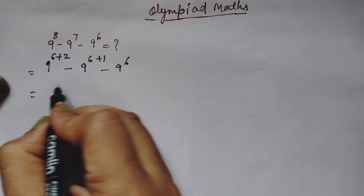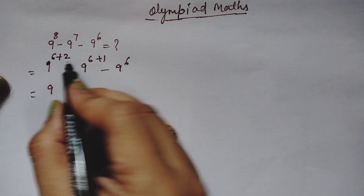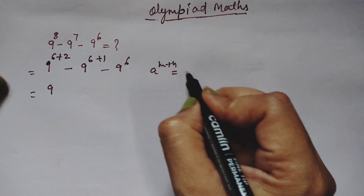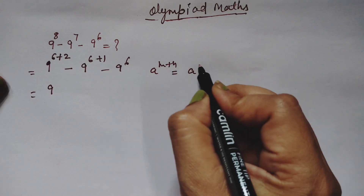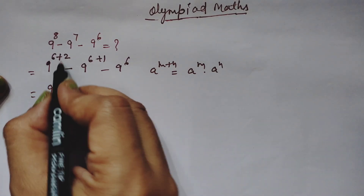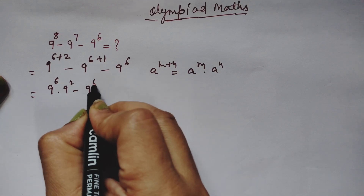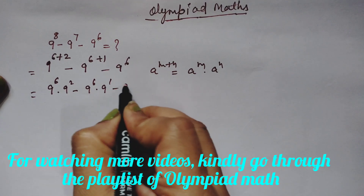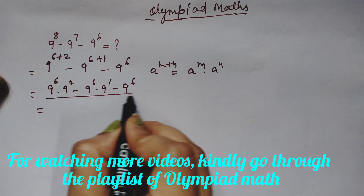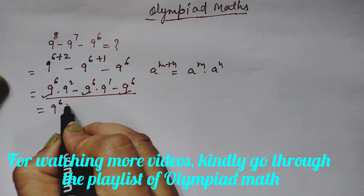Now we apply the rule of exponents: a to the power (m+n) equals a^m times a^n. So 9^(6+2) becomes 9^6 times 9^2, and 9^(6+1) becomes 9^6 times 9^1. You can see that 9^6 is common in all three terms, so we factor it out.